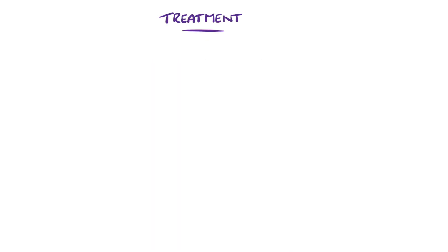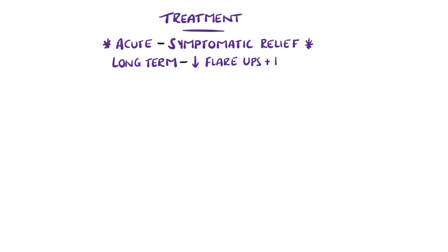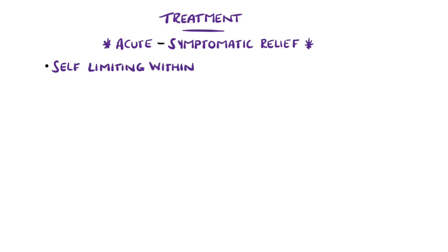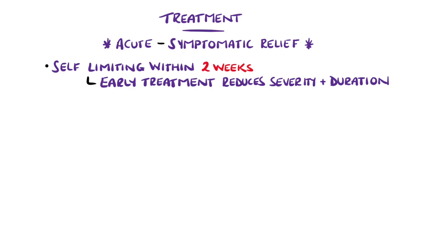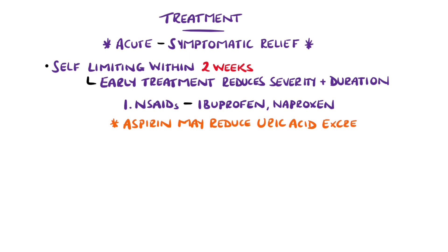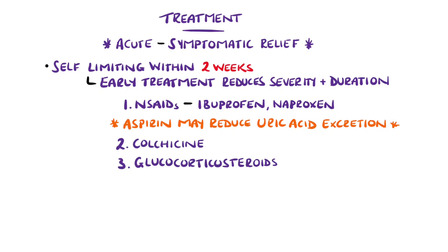During acute flares, the aim is to reduce symptoms and inflammation, and longer term to reduce urate levels to reduce the risk of flare-ups and chronic joint destruction. Early treatment within 24 hours can help reduce the severity and duration, but overall acute flares will be self-limiting within two weeks in most cases. Options include non-steroidal anti-inflammatories like ibuprofen or naproxen, but aspirin is not indicated because it can paradoxically increase serum urate levels by promoting renal retention. Colchicine is another option, as are glucocorticosteroids, which are first line in patients who cannot take non-steroidals or colchicine.